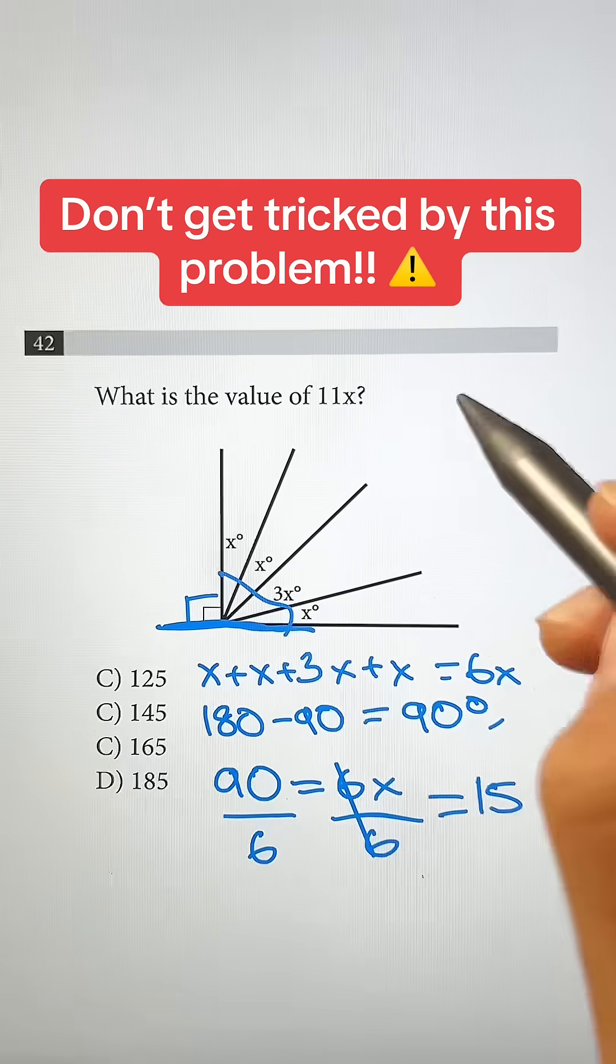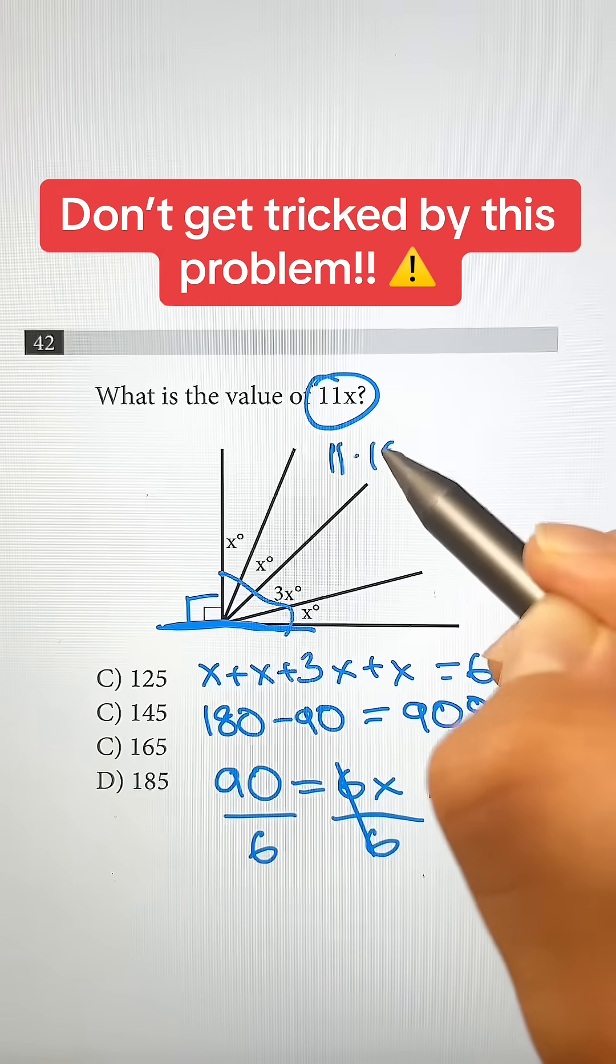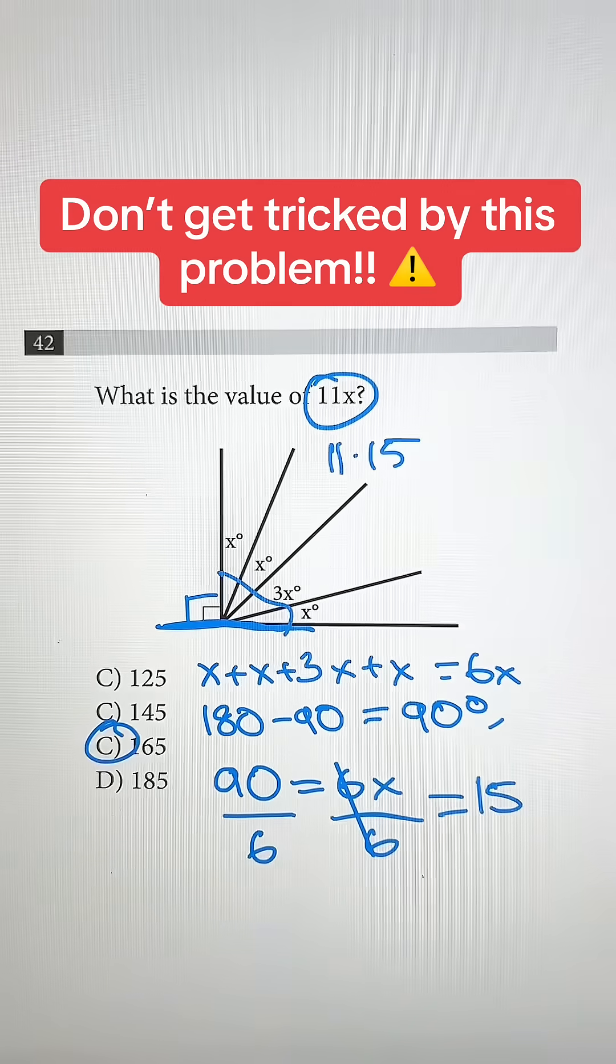But that's not our answer because we want to find 11x, not 1x. So to find 11x, we just do 11 times 15 and we get C, which is our answer.